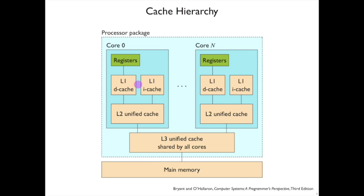The reason that these are separate is because they have different properties — data is not usually used as instructions and vice versa. So in the normal circumstance when looking for data, we check the L1 data cache first. If it's not there, the search proceeds to an L2 cache, which is bigger and has more stuff, but is further away from the main work of the processor, so it takes longer to get things from there.